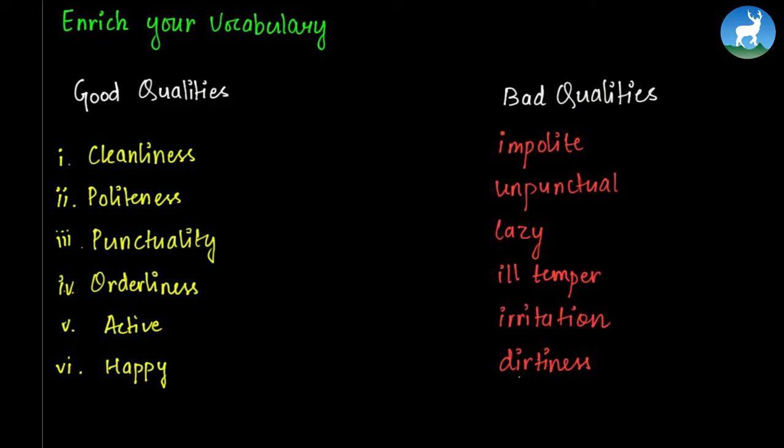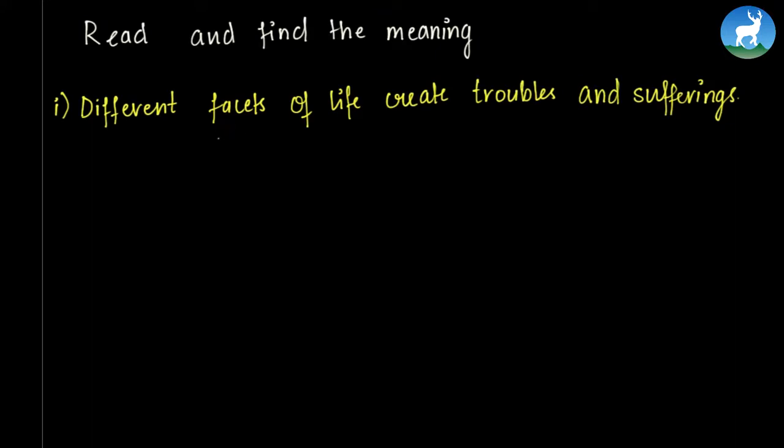Now, we move towards reading the key words from the sentences that will be given. And then we'll choose the best meaning for the underlined words. So it's basically read and find the meaning. Different facets of life create troubles and suffering. Now, we need to find a word that's similar to the meaning of facets. The best word for facets can be aspects because different aspects of life creates troubles and suffering. So being a student is one of the aspects of your life. So the best meaning is aspects.